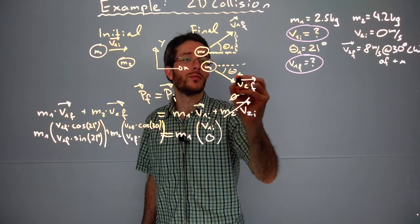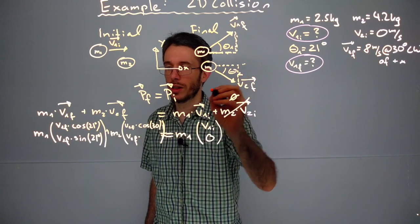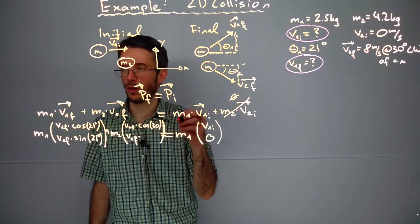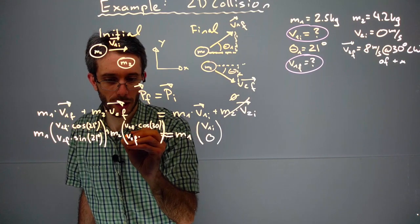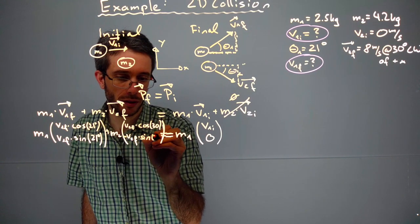In y direction I have sine of 30, and negative because we are going downwards. So negative sine of 30.